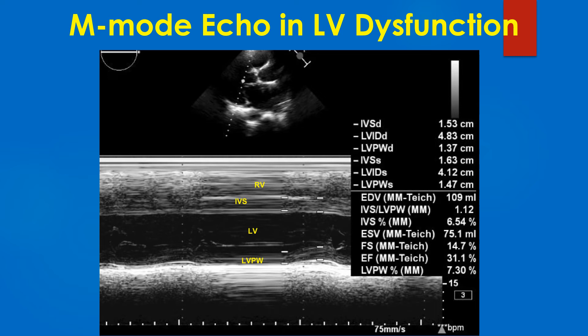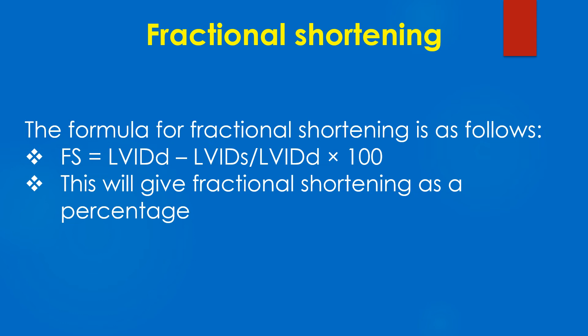Abbreviations: IVSD – Interventricular septum diastolic; LVIDD – Left ventricular internal diameter diastolic; LVPWD – Left ventricular posterior wall diastolic; IVSS – Interventricular septum systolic; LVIDS – Left ventricular internal diameter systolic; EDV – End diastolic volume; IVS/LVPW – Septal to posterior wall ratio; ESV – End systolic volume; FS – Fractional shortening. The formula for fractional shortening is: FS = (LVIDD − LVIDS) ÷ LVIDD × 100, giving fractional shortening as a percentage.